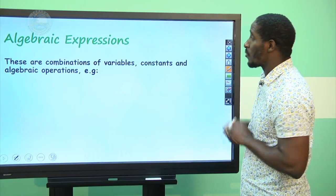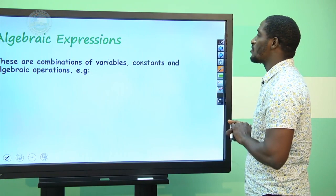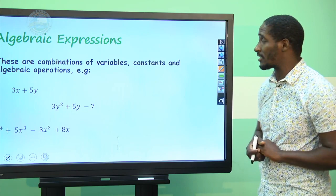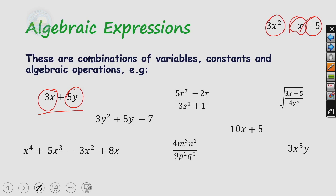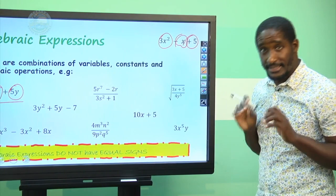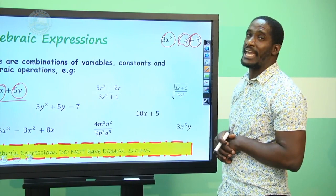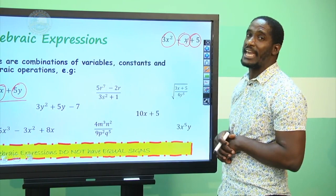Now we want to look at what algebraic expressions are. Algebraic expressions are combinations of variables, constants, and algebraic operations. They are slightly different from algebraic terms. Algebraic terms are the individual entities joined by multiplication — for example, 3x is a term, 5y is a term. Brought together, we have an algebraic expression. Importantly, algebraic expressions do not have equal signs or inequality signs.